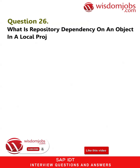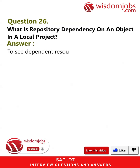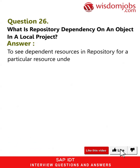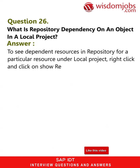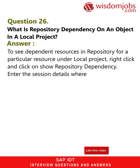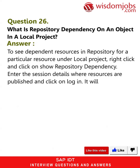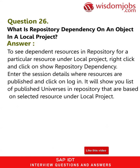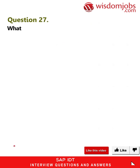Question 26: What is repository dependency on an object in a local project? Answer: To see dependent resources in the repository for a particular resource in a local project, right-click and choose Show Repository Dependency, enter the session details where resources are published, and click Login. It will show you a list of published universes in the repository that are based on the selected resource under the local project.